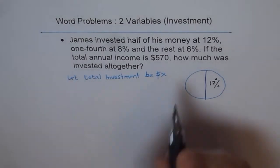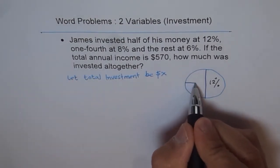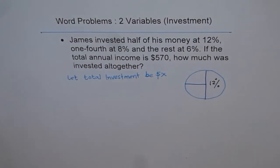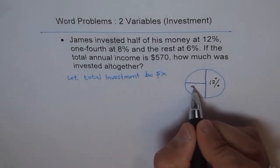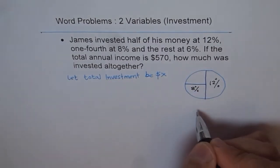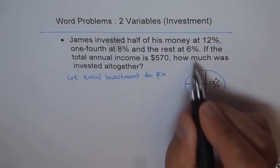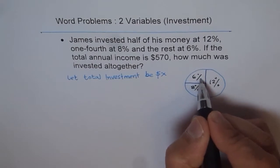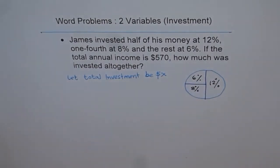Now it says one-fourth is at 8%. Let's divide it like this, so we have here 8%, one-fourth. How much remains? One-fourth remains, so that is also one-fourth at 6%. That is the distribution of investment of X dollars.